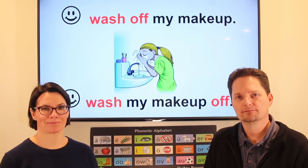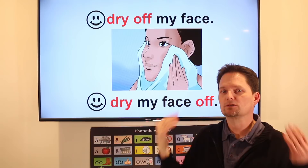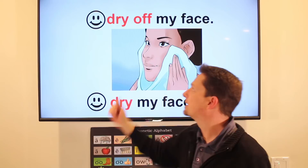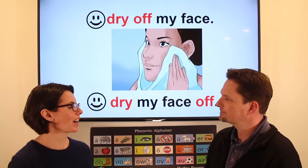Dry off. With a towel, I dry off my face. Remember: 'face' is part of your body, so we use possession — my face, your face. I dry off my face. Pronunciation: DR makes the 'jjj' sound like jump. I dry off my face. You can separate the phrasal verb: I dry my face off with a towel. What do you do after you wash off your makeup? I dry off my face.